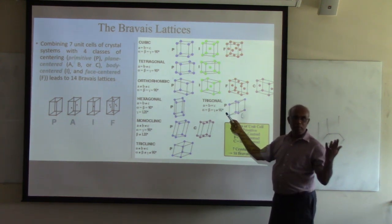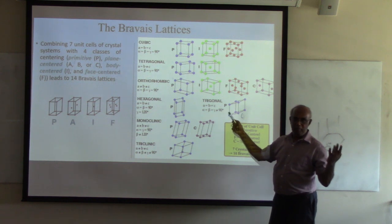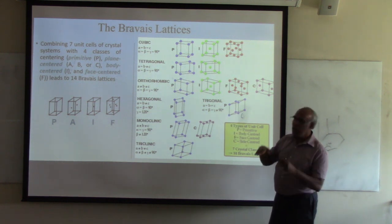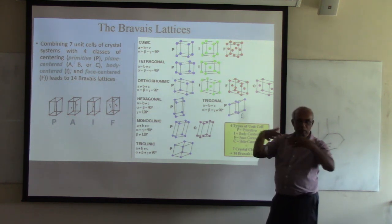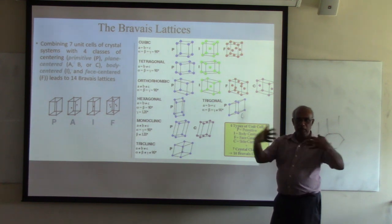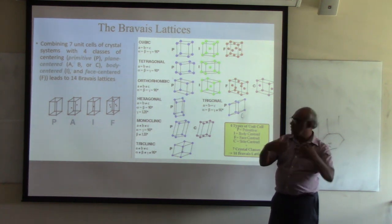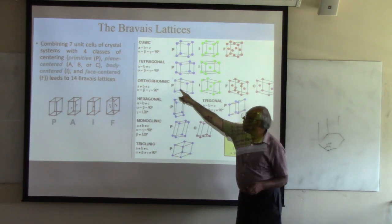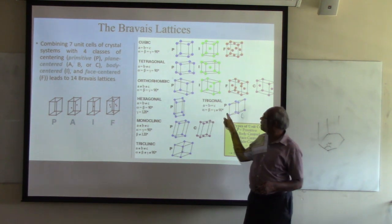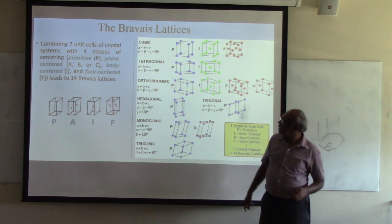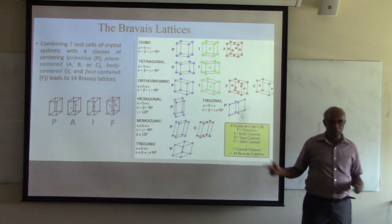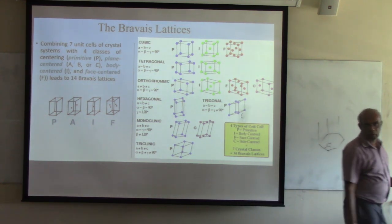The rhombohedral structure is also called trigonal. In that case, all lengths are equal but the angles are all equal to each other but not equal to 90 degrees. Right now we are doing research on phase transitions from orthorhombic to rhombohedral — for example, black phosphorus is a very interesting material where we apply intercalation and pressure to make the orthorhombic structure become rhombohedral.